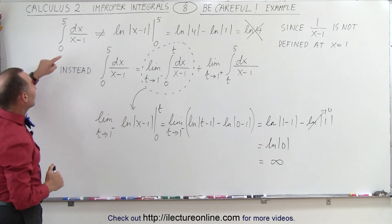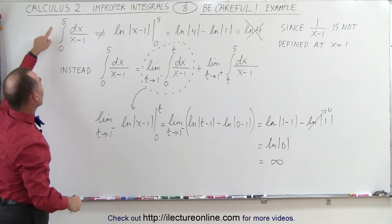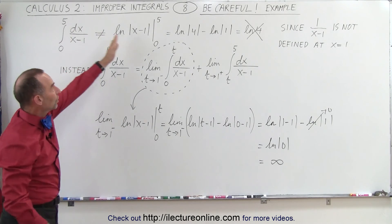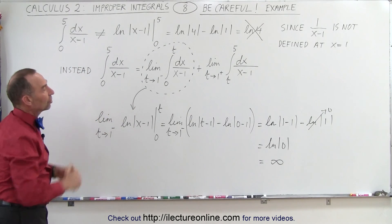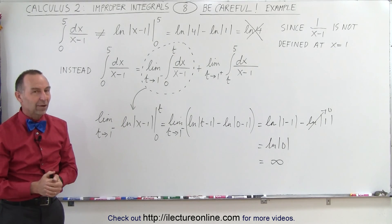So again, be careful when the function is not defined anywhere in between the range going from the lower to the upper limit. Then we cannot just simply solve it like that. We have to split it up into two integrals, and each integral must converge for the whole integral to converge. And that's how it's done.